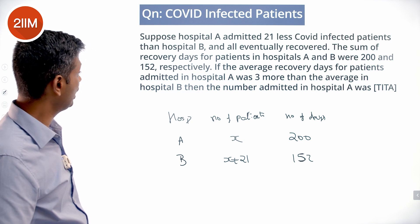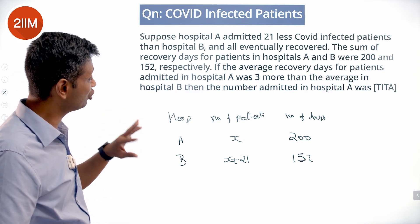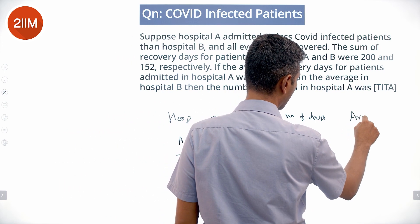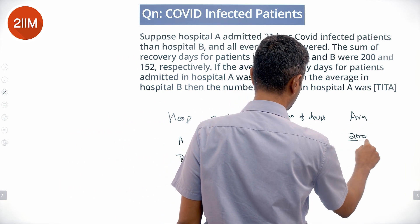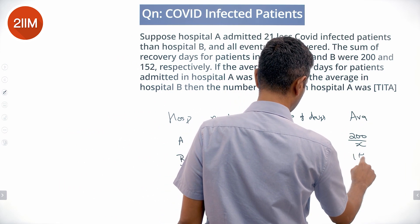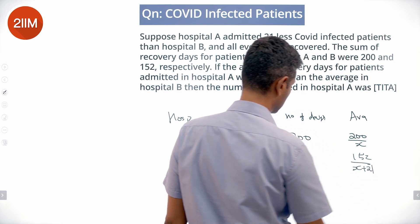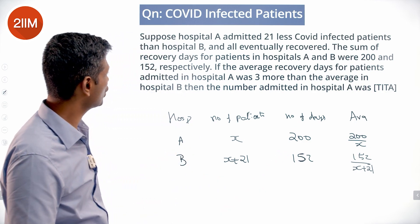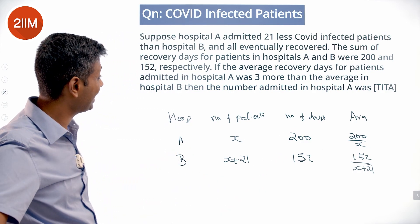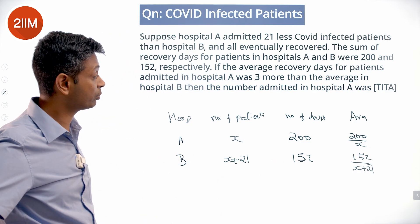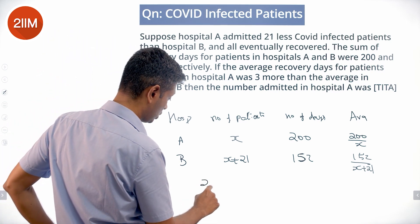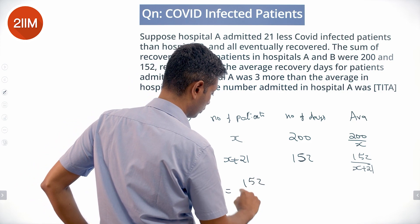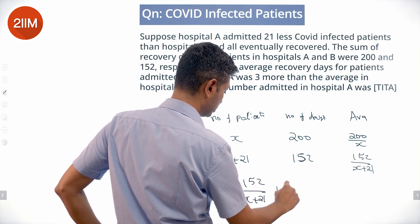If the average recovery days for patients in hospital A was 3 more than hospital B, then the average for A is 200/x and for B is 152/(x+21). So the equation is: 200/x equals 152/(x+21) plus 3.